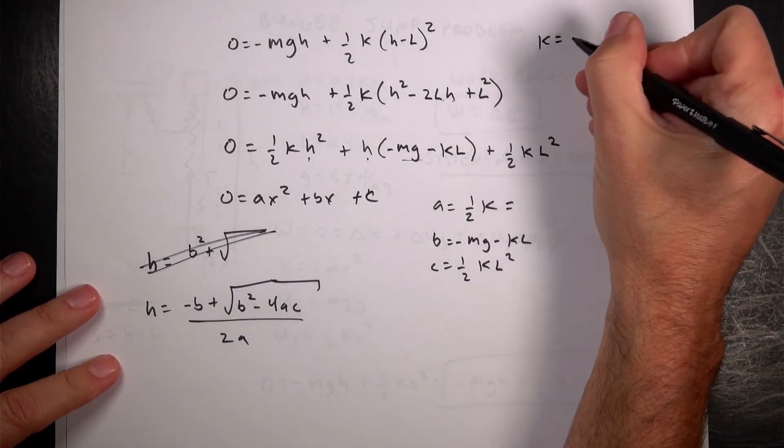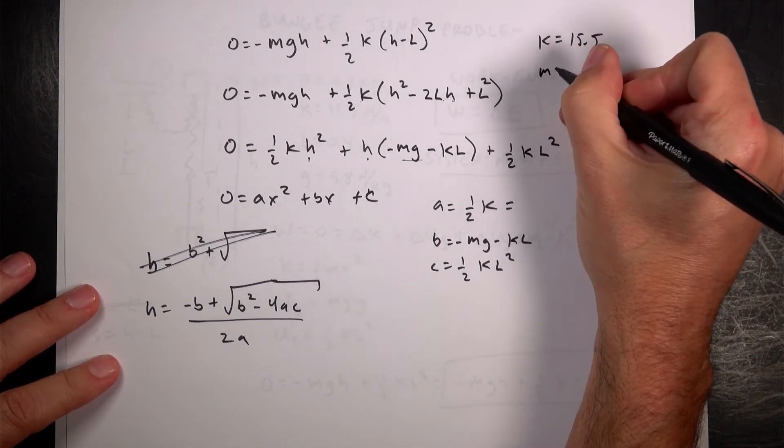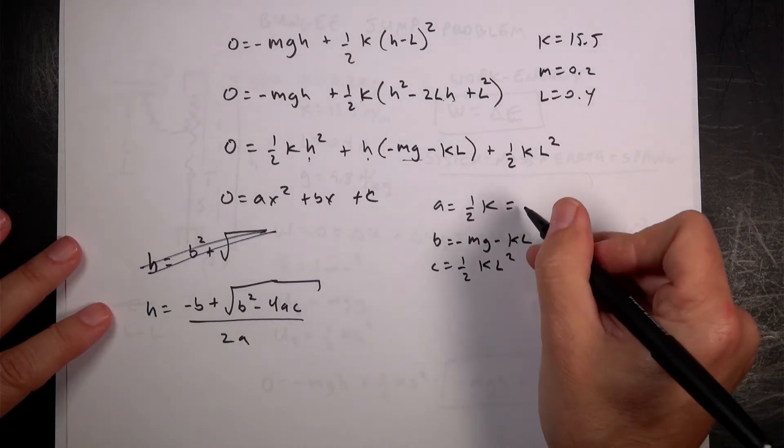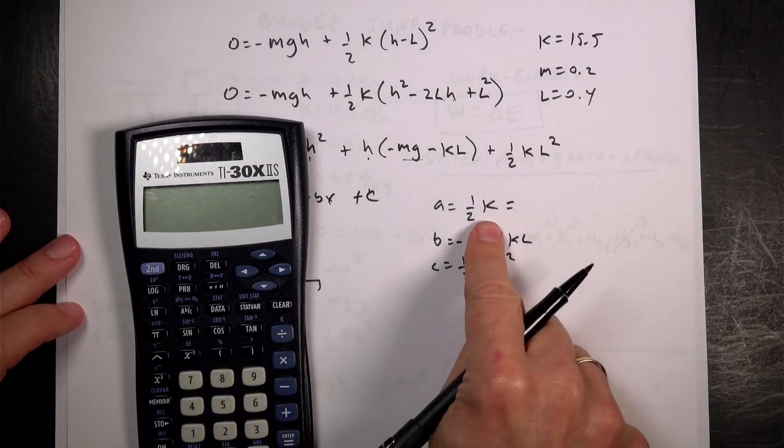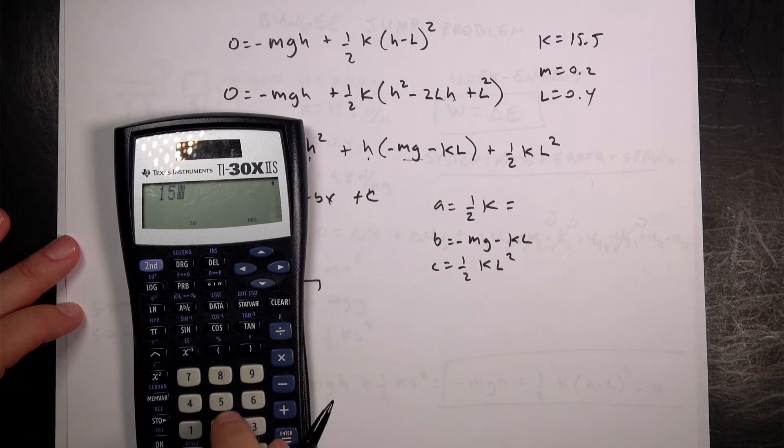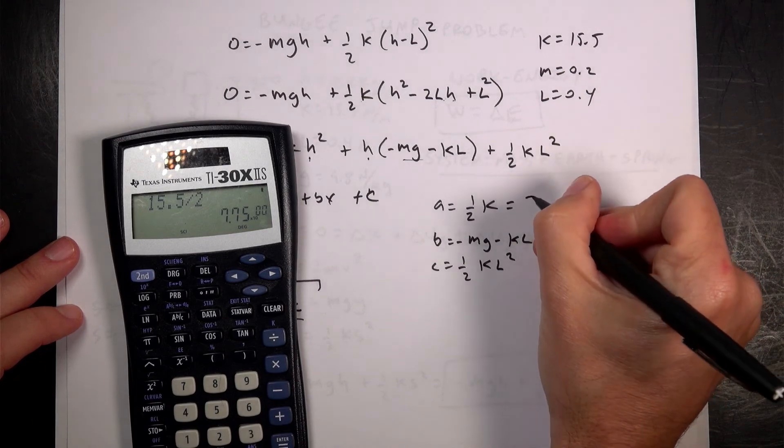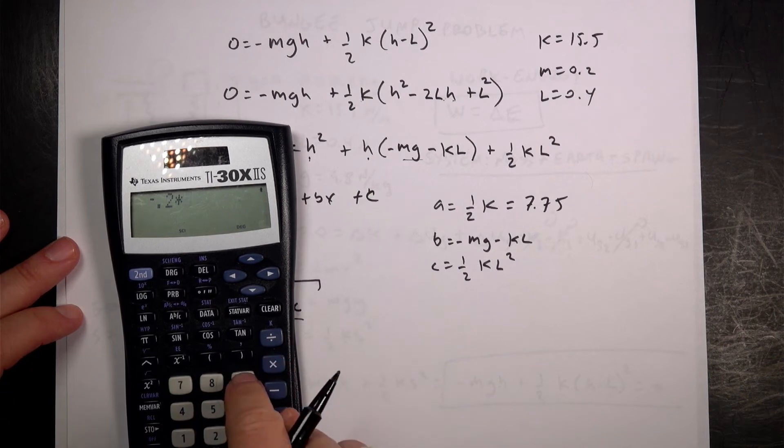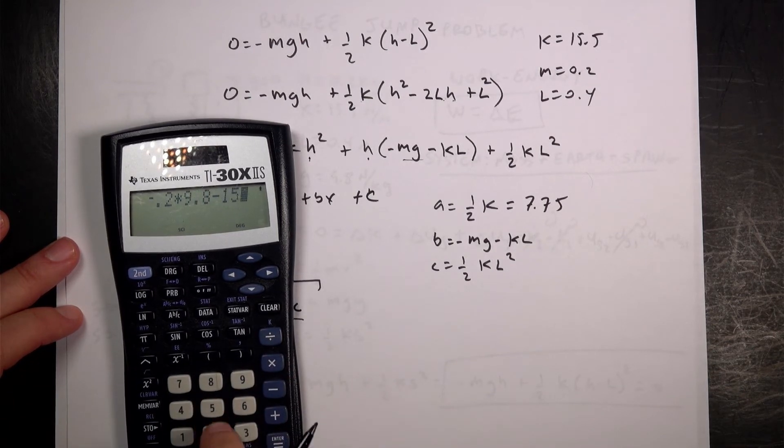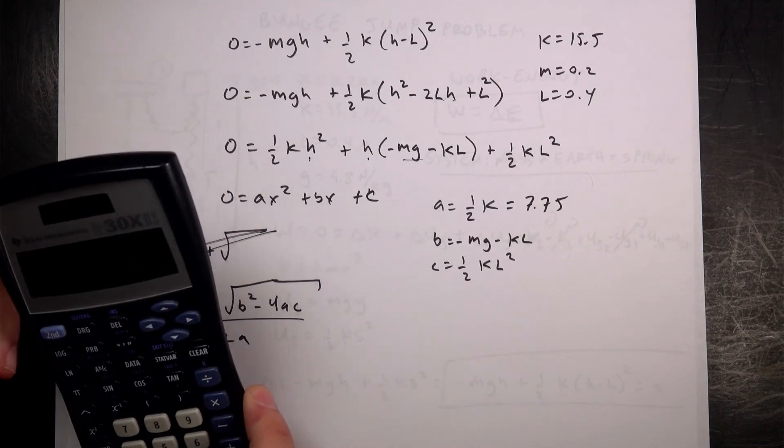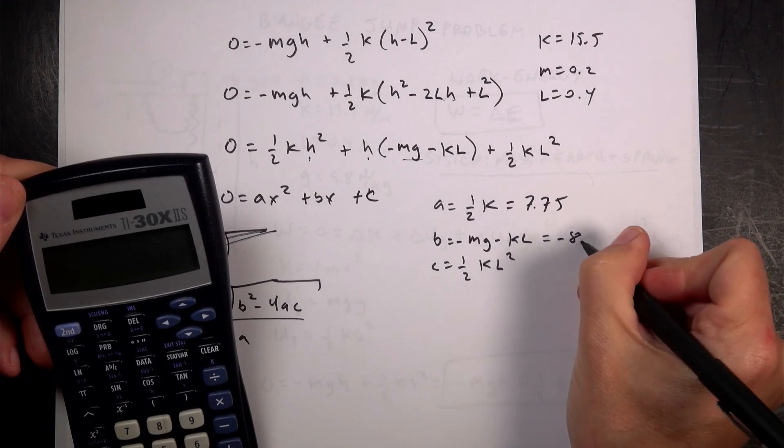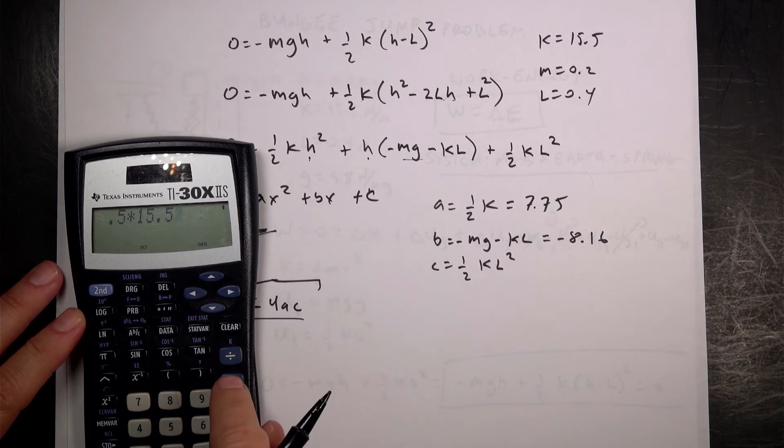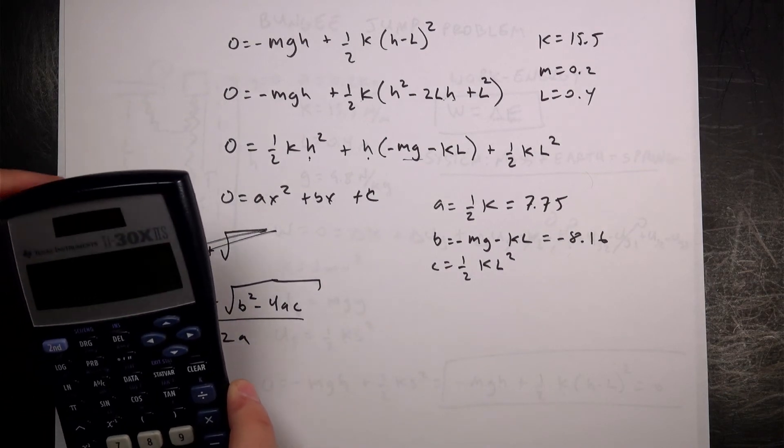And then I can put them in over here. I wouldn't normally do it this way, but it works better on the paper here. So let's do 15.5 divided by 2. That's 7.75. And then I get negative M times G minus K times L. And I get negative 8.16. And then this last one I have 0.5 times 15.5 times 0.4 squared. 1.24.